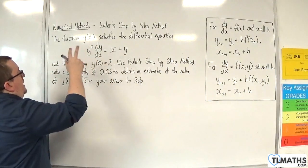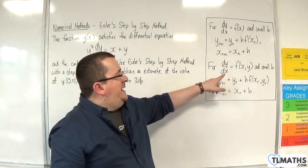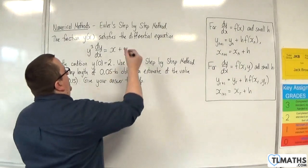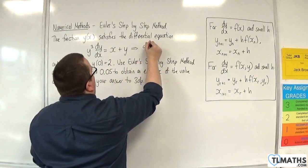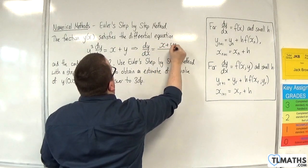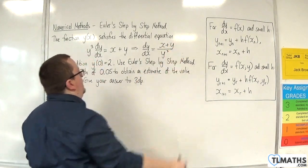Okay, so we have, first of all, not the correct form. We need it to be of the form dy/dx equals some function of x and y. So I'm going to divide both sides by y³ to get dy/dx equals (x + y)/y³. Just rewrite that three there.